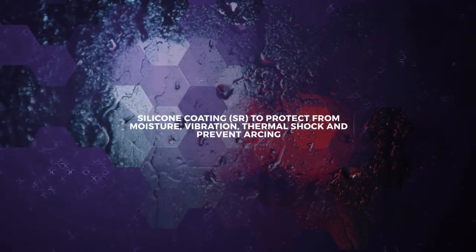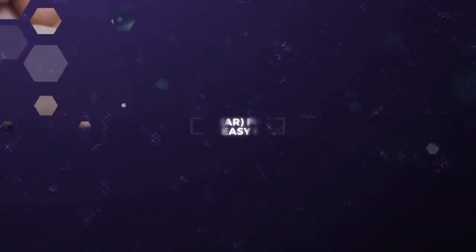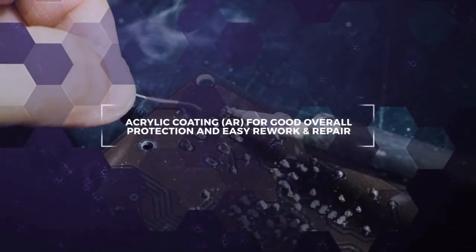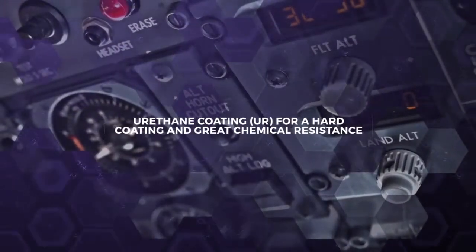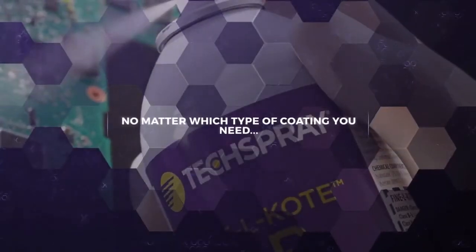So for maximum protection, choose silicone coatings for moisture, vibration, and thermal resistance, and to prevent arcing. Acrylic coatings for good overall protection and easy circuit board rework. And finally, urethane coatings for maximum chemical resistance, no matter what type of coating you need.